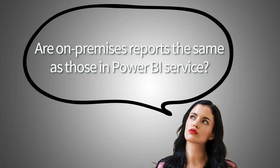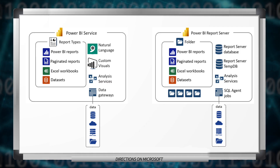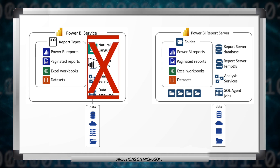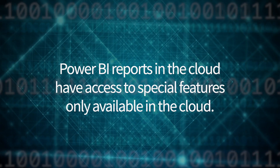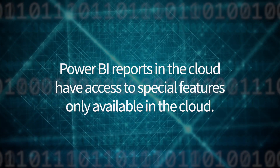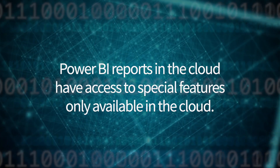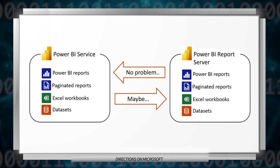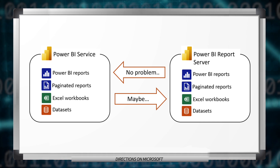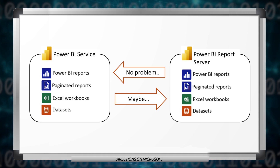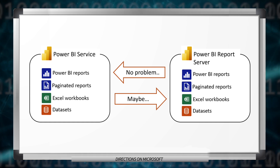When I talk about this product, there are often several questions that surface. First, are the on-premises reports the same as those used in the Power BI Service? Well, mostly. They use the same format and share most of the same features, but not everything. Power BI Reports in the cloud have access to special features only available in the cloud, like AI capabilities that can automatically analyze data and create narratives inside a report. You can take an on-premises report and publish it to the cloud and it will work fine, but publishing cloud reports back to on-premises doesn't always work — it depends on which features were used. Also, building reports for on-premises requires a different edition of Power BI Desktop, so report creators will likely have to work in two different apps to deploy to both environments.